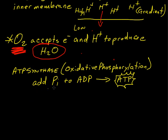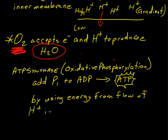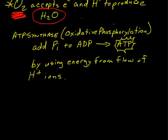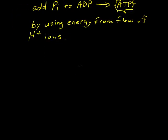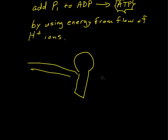And it's able to do this, we'll say, continue this statement. It adds inorganic phosphate to ADP to make ATP by using energy from the flow of hydrogen ions. And so just like in the light reactions, here's our ATP synthase, and here's our membrane.